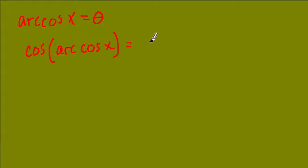So this is just like the cosine of theta, and that's going to equal x. So the cosine of the arc cosine of x just gives us x.